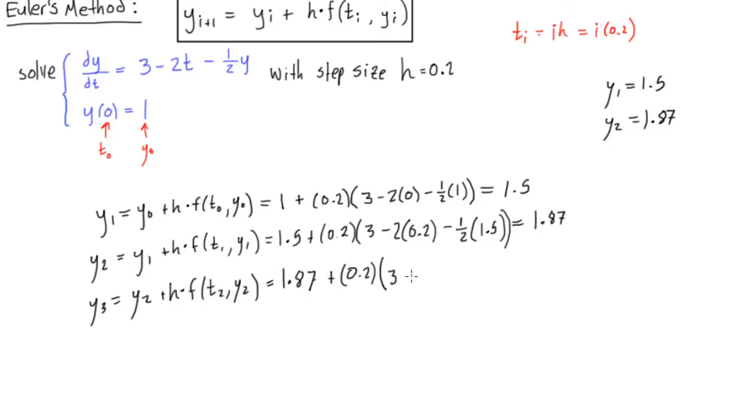So first of all, we still have this constant 3 minus 2 times t2. Now if we have t2, we'll have 2 times 0.2, so this is times 0.4, minus 1 half times y2, and y2 was 1.87. All right, close that bracket, and when you evaluate this, punch all this into your calculator, you'll get 2.123.